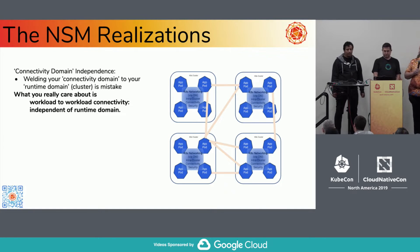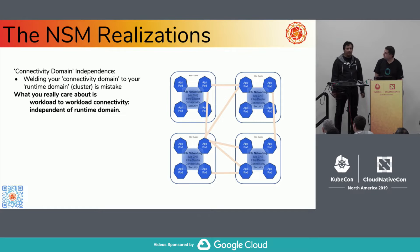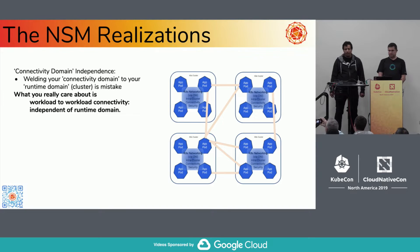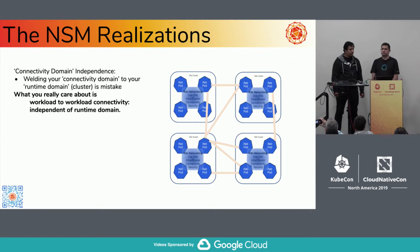When you write an application with a bunch of microservice workloads, what you really care about is being able to communicate with the workloads in your application. You don't really care where they're running — you care who you need to be able to talk to. It's actually unnatural to weld a connectivity domain to a runtime domain the way we have. What you'd really like is the ability for workloads to connect to other workloads they're interacting with, no matter what public cloud they're running in, on-prem, or in different clusters.